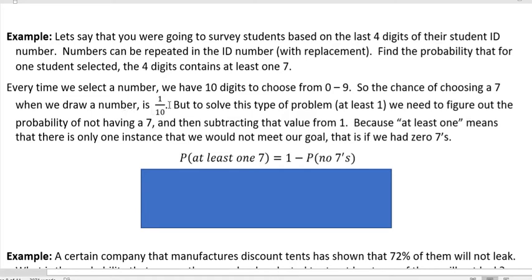But if we used one tenth to do this, one tenth we would be saying what's the probability that we drew something that had four sevens in it. That if we multiplied one tenth times each other. So we don't want to use one tenth. At least one, we need to figure out what the probability of not having a seven is, and then we subtract that value from one. Because at least one means that there is only one instance that we would not meet our goal, and that is if we had zero sevens.